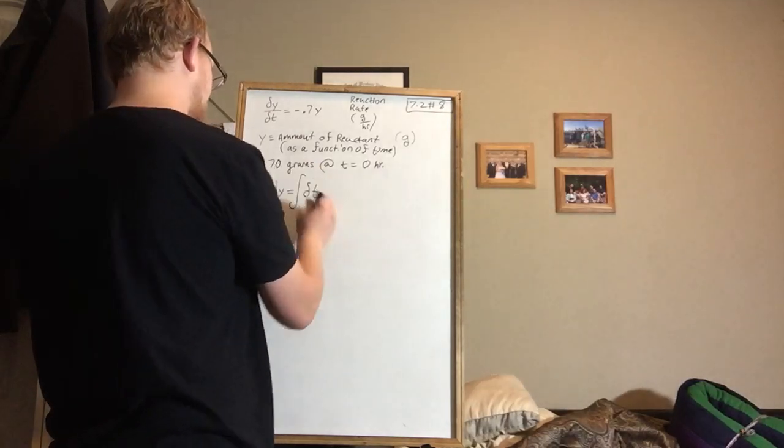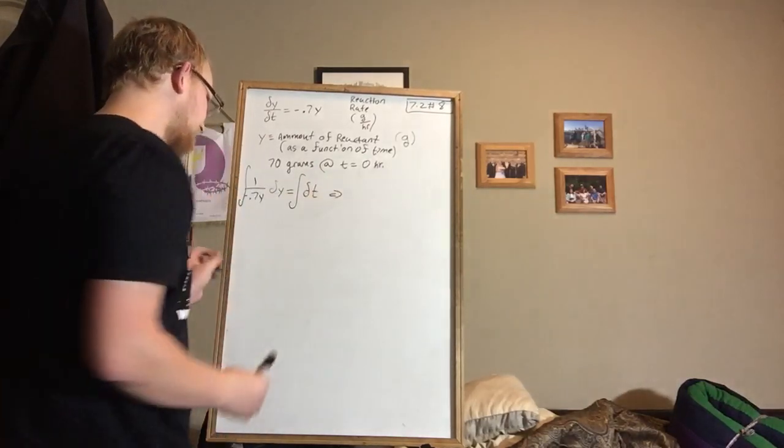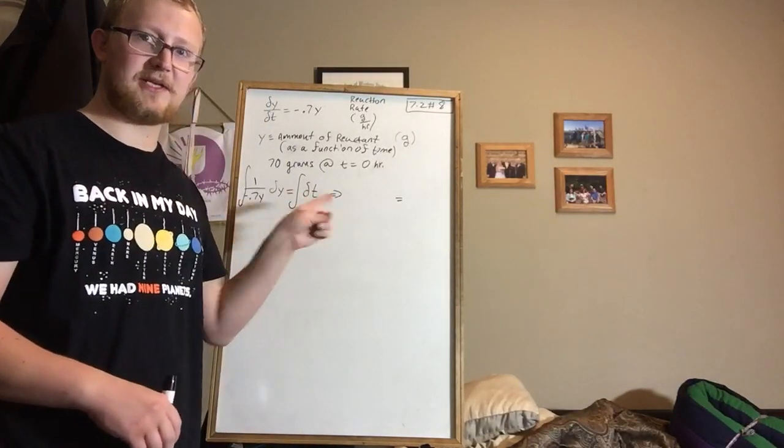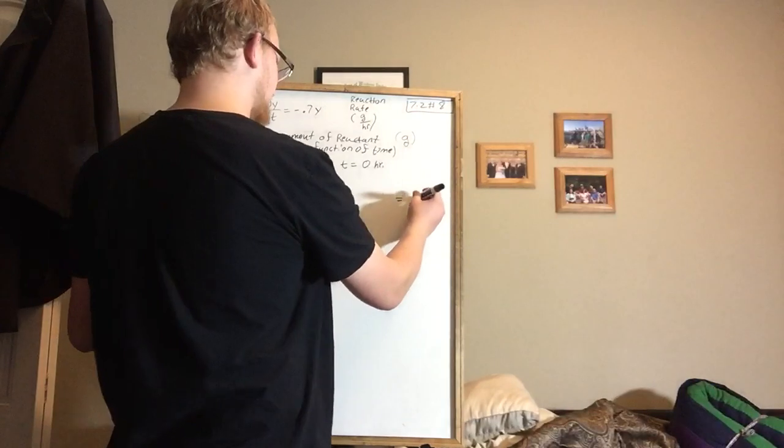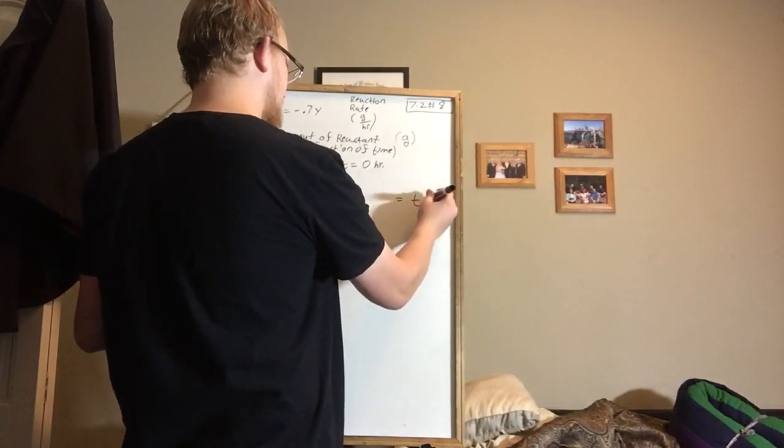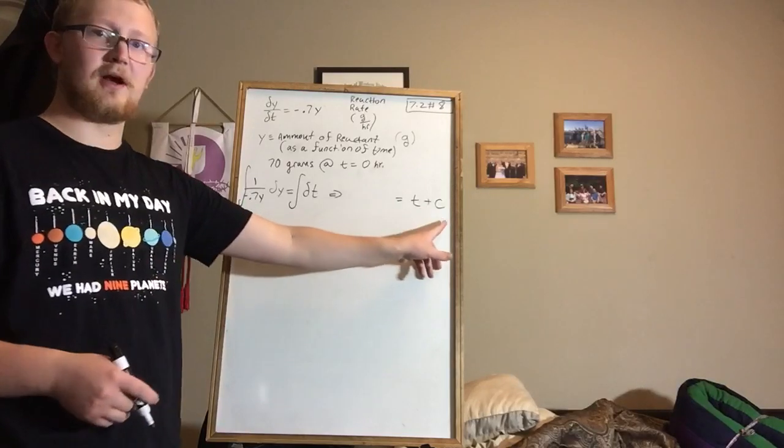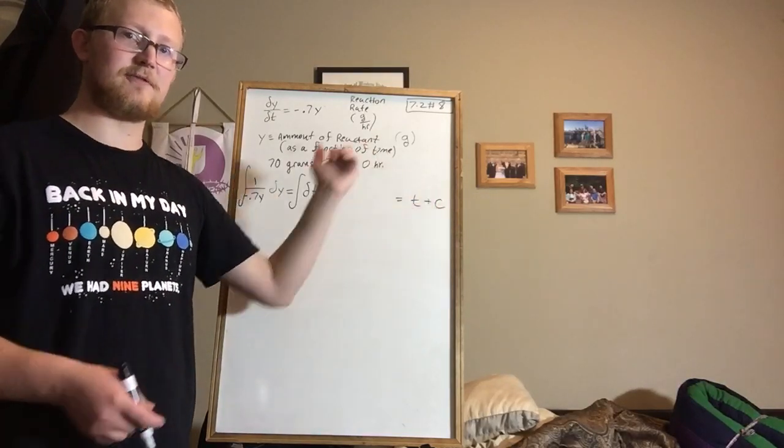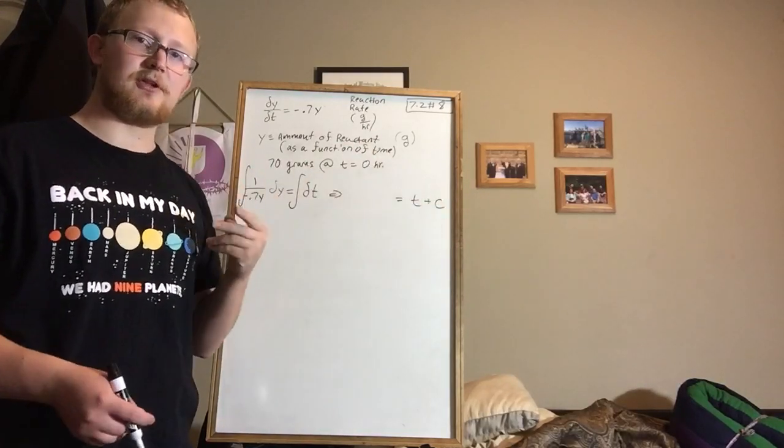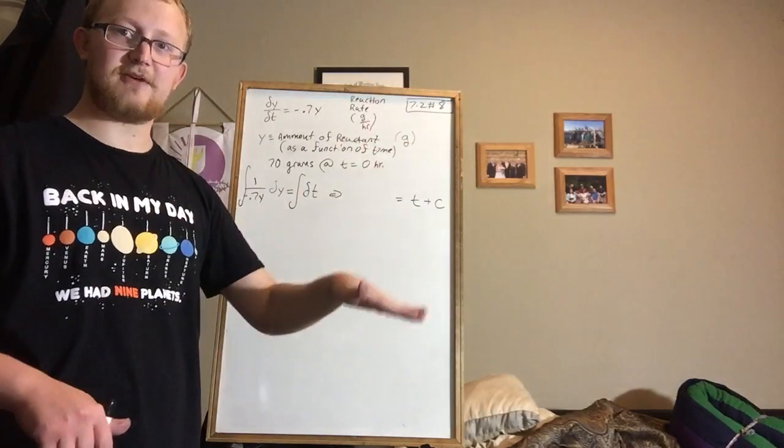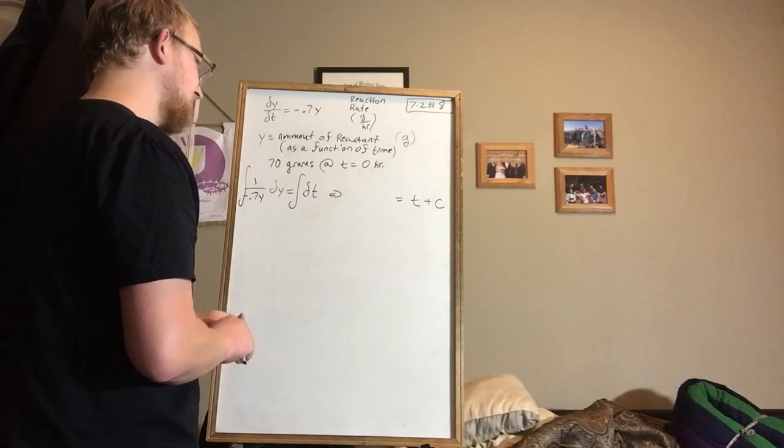I'm going to take the integral of both sides. And let's do the right side first. The integral of 1 with respect to t is, of course, just t plus the constant c. And we're only going to need one constant. So if you use a constant for one side, you don't need to include a constant for the other side. All you need is one constant to shift this graph vertically to where it's supposed to be.